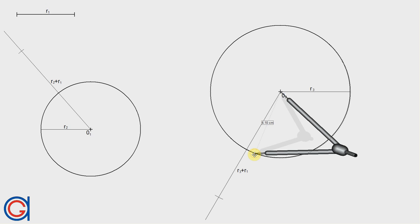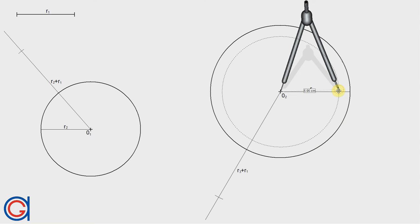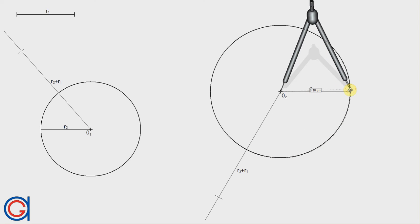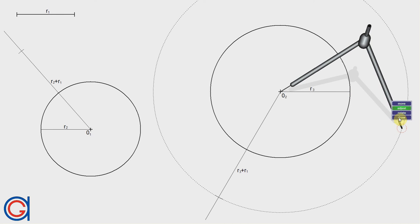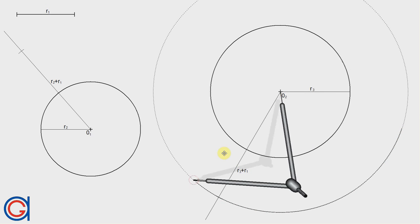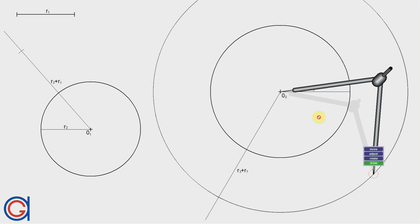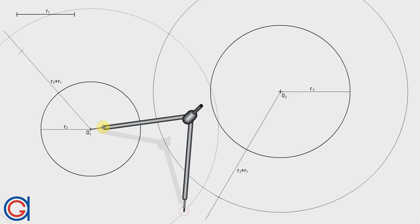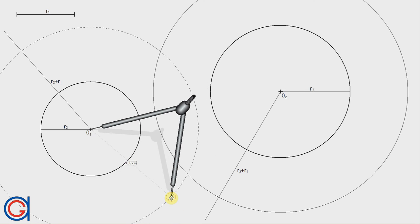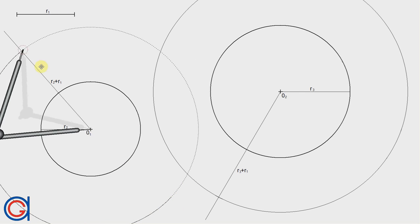Now we'll repeat this process with the other circle. Setting our compass on O1 and with the radius R1 plus R2, we'll draw a second auxiliary circle.